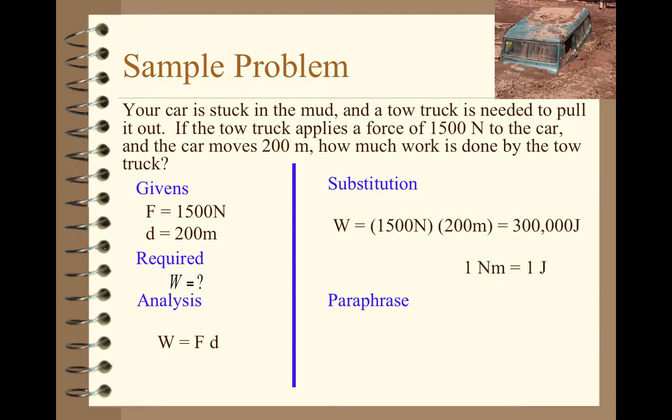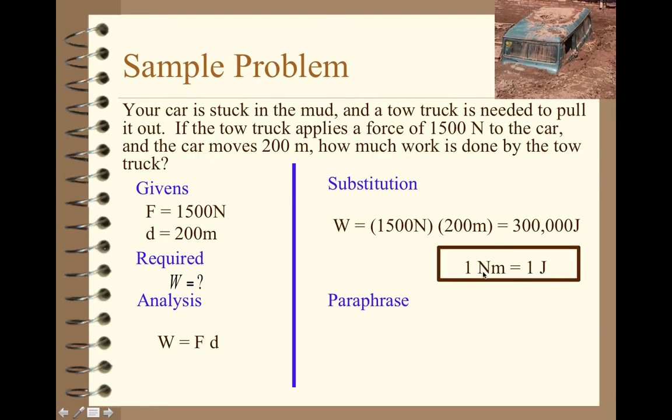Quite a bit of work or energy. Keep in mind, where are we getting this joule from? A joule is equivalent - one joule is equivalent to one newton meter. So you can see the newton times the meter, one newton meter is exactly equivalent to one joule. So paraphrase our solution: the tow truck has done 300,000 joules of work to pull the car out of the mud. So again, keep that in mind, the units of work or energy in this case, the J stands for the word joule and you'll see more of that when you do the reading part of this assignment.